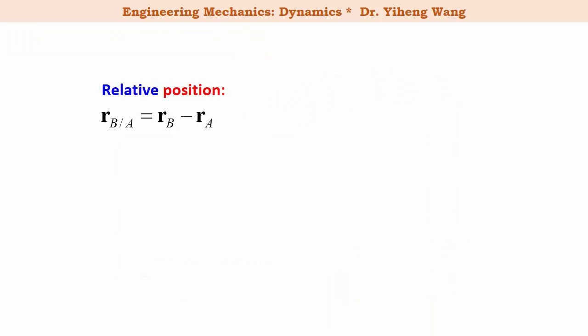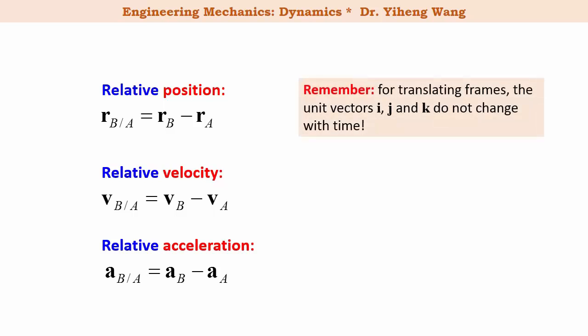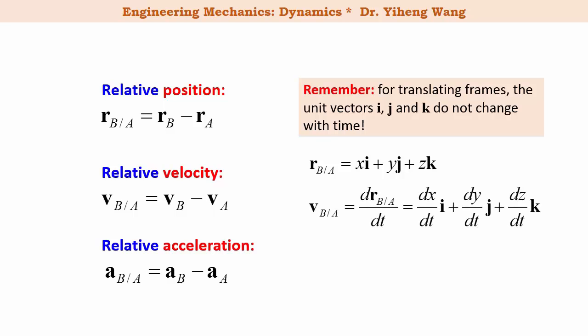If we take the time derivative of the relative position equation, we get the equation for relative velocity, and if we take the time derivative again, we get the equation for relative acceleration. However, for translating frames, the unit vectors i, j, and k do not change with time, so there is no need to apply chain rule since only the x, y, and z positions are functions of time. As you can tell, this is going to change for a rotating frame of reference.